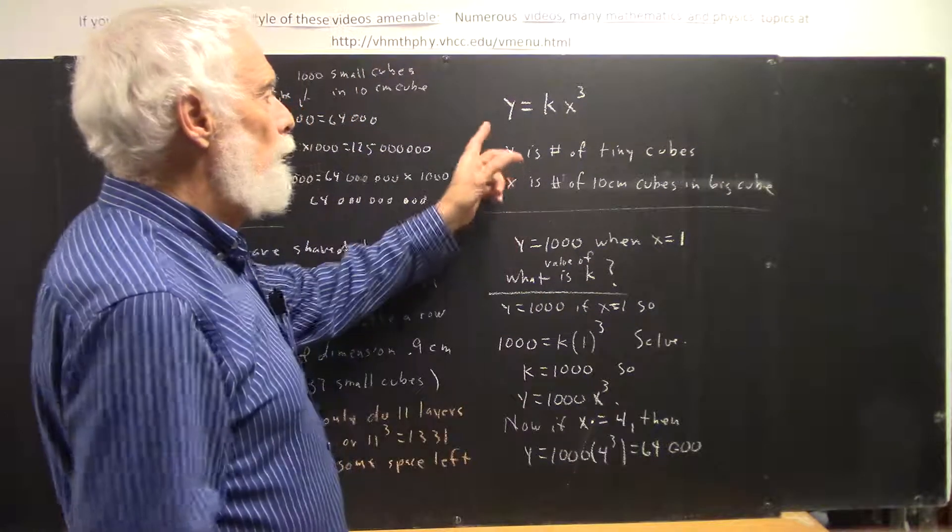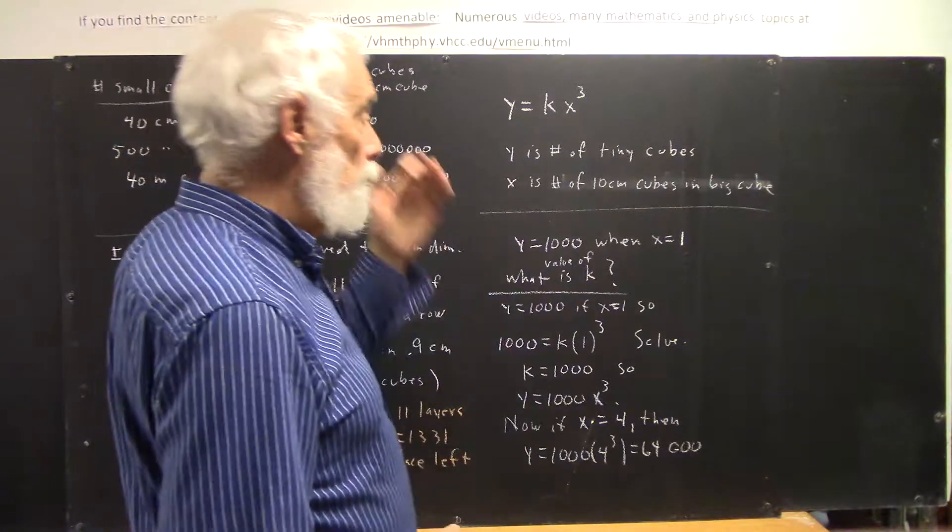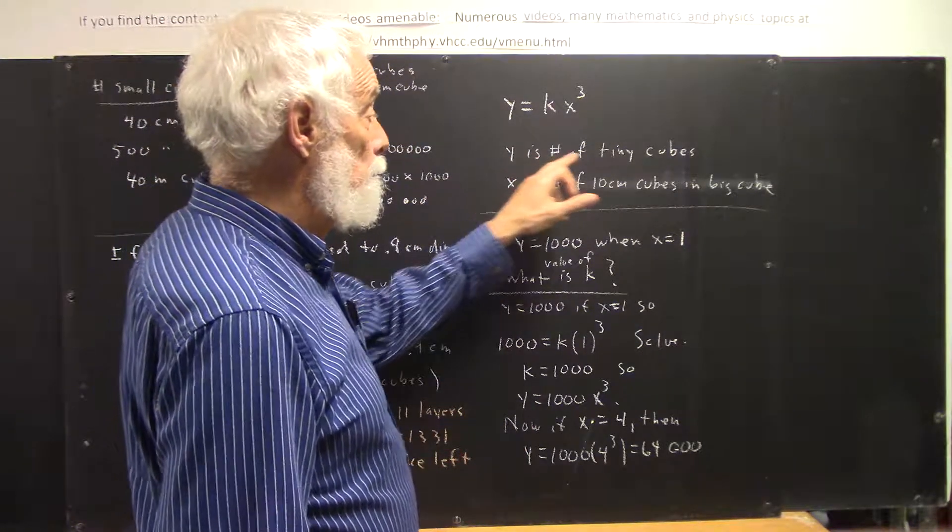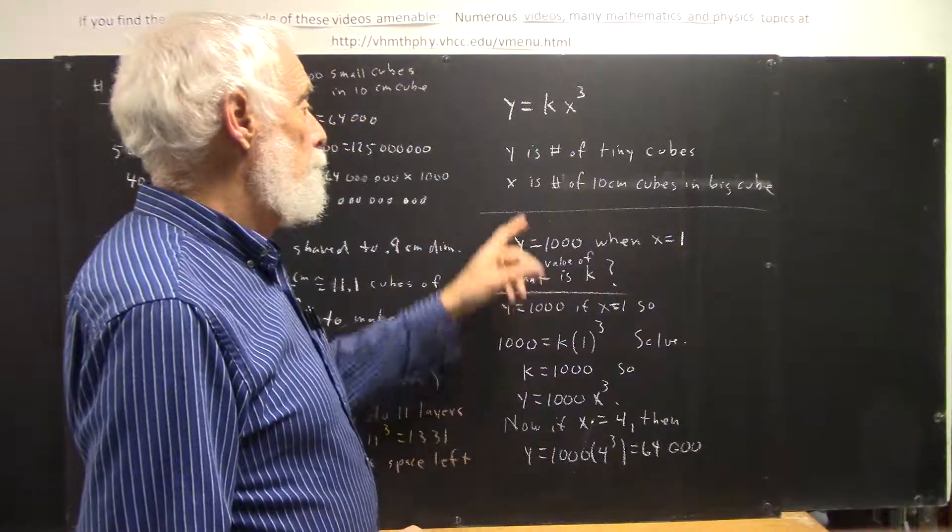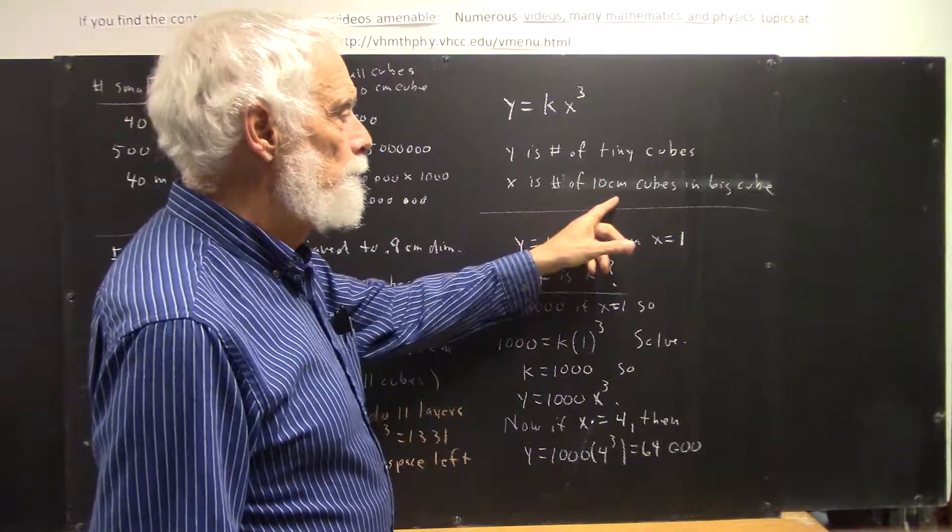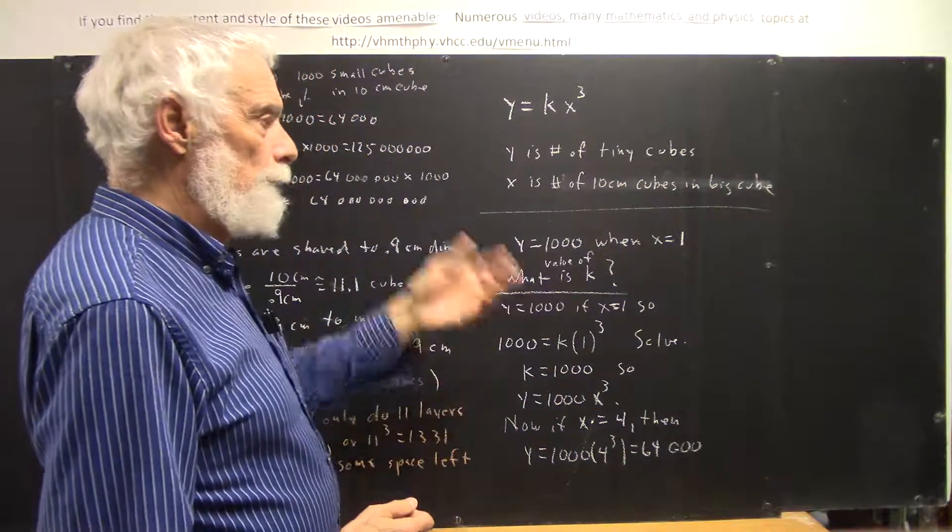I'm going to write out an equation, y equals kx cubed, and I'm going to say that y represents the number of tiny cubes, the number of 1 centimeter cubes, and x is the number of 10 centimeter cubes in a big cube.